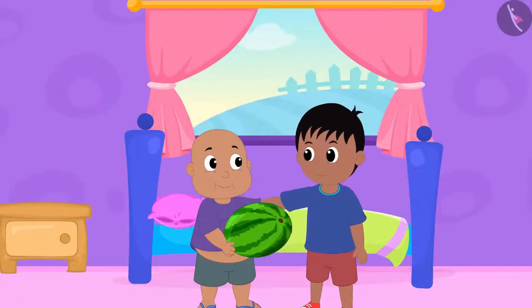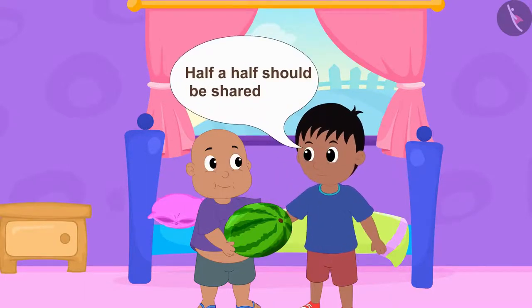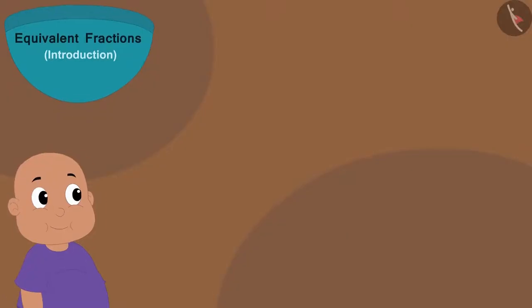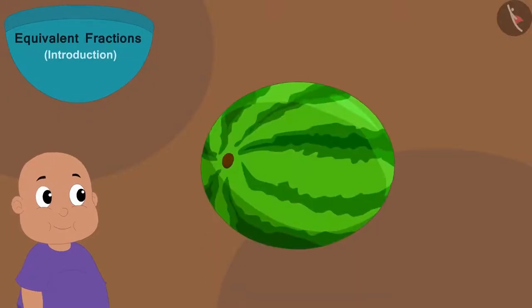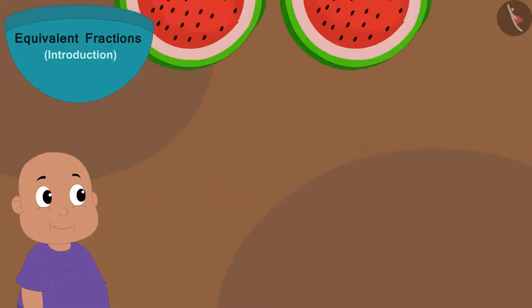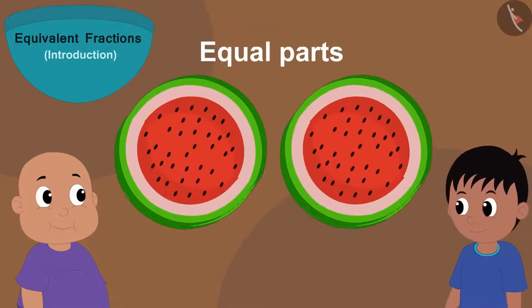Now, Raju told Bablu that he should divide the watermelon in two halves. Bablu cut the watermelon in two equal parts and gave one part to Raju.